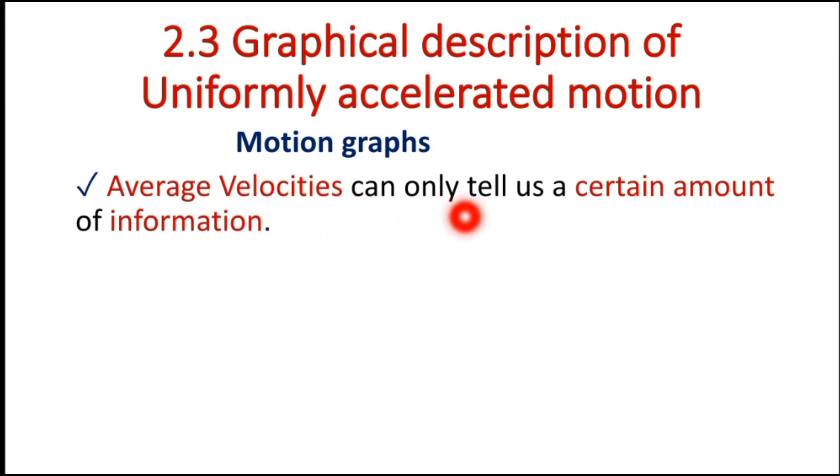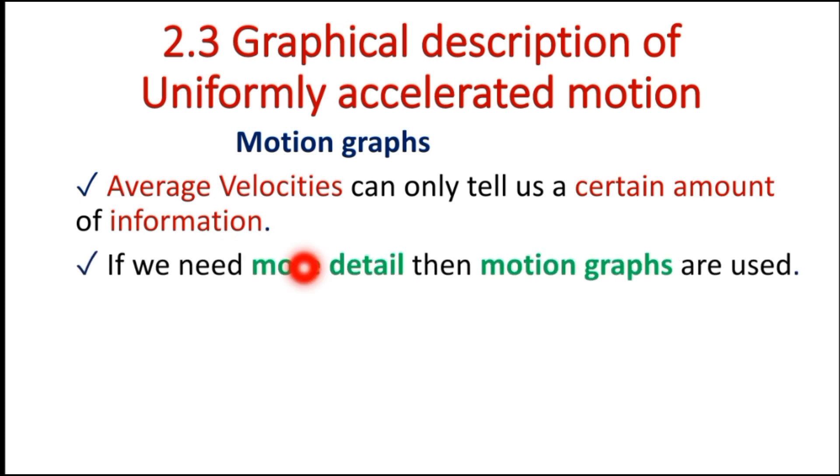Average velocity can only tell us a certain amount of information. If we need more detail then motion graphs are used. Motion graphs allow us to see more information about an object's movement.